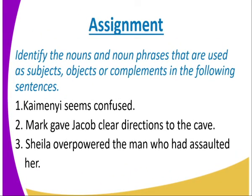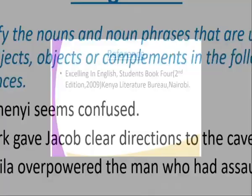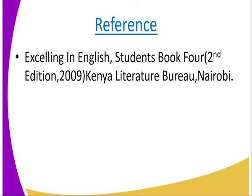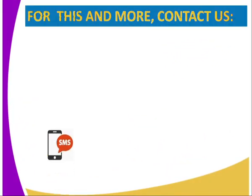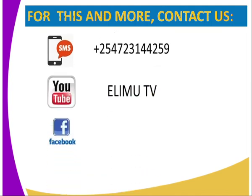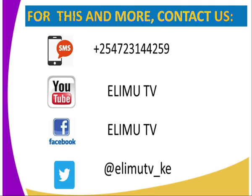Assignment: identify the noun and noun phrases that are used as subjects, objects, or complements in the following sentences. You can refer to Excelling in English, Students Book 4, Second Edition, published by the Kenya Literature Bureau. You can also contact us on the SMS line posted on the screen, YouTube Limu TV, Facebook Limu TV, Twitter at Limu TV underscore KE.